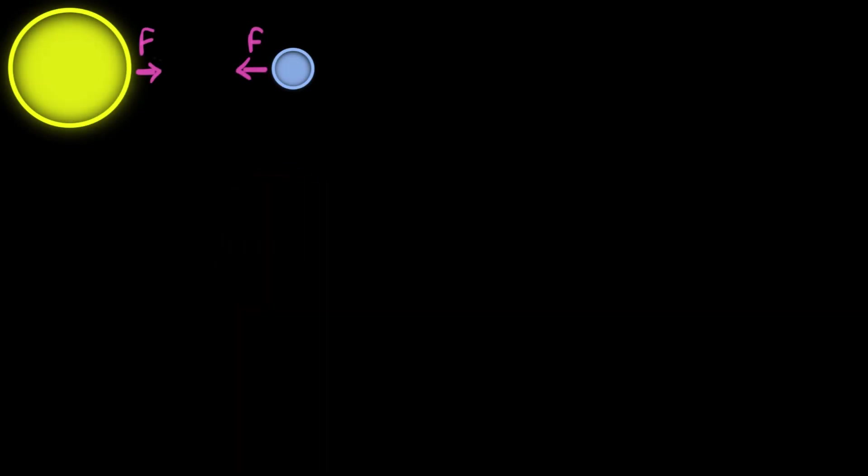Now before we begin, we've already seen how to calculate this force of gravity between any two objects. It's given by what is called the universal law, and it looks like this. Where F is the force of gravity, G is a universal constant. And it's a very, very tiny number, 6.67 times 10 to the minus 11.